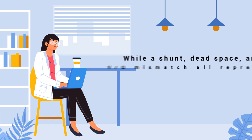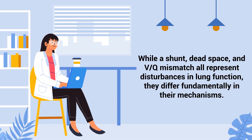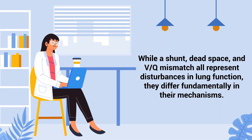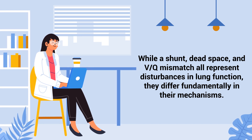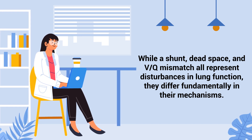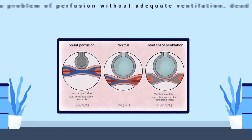As previously mentioned, while a shunt, dead space, and VQ mismatch all represent disturbances in lung function, they differ fundamentally in their mechanisms.